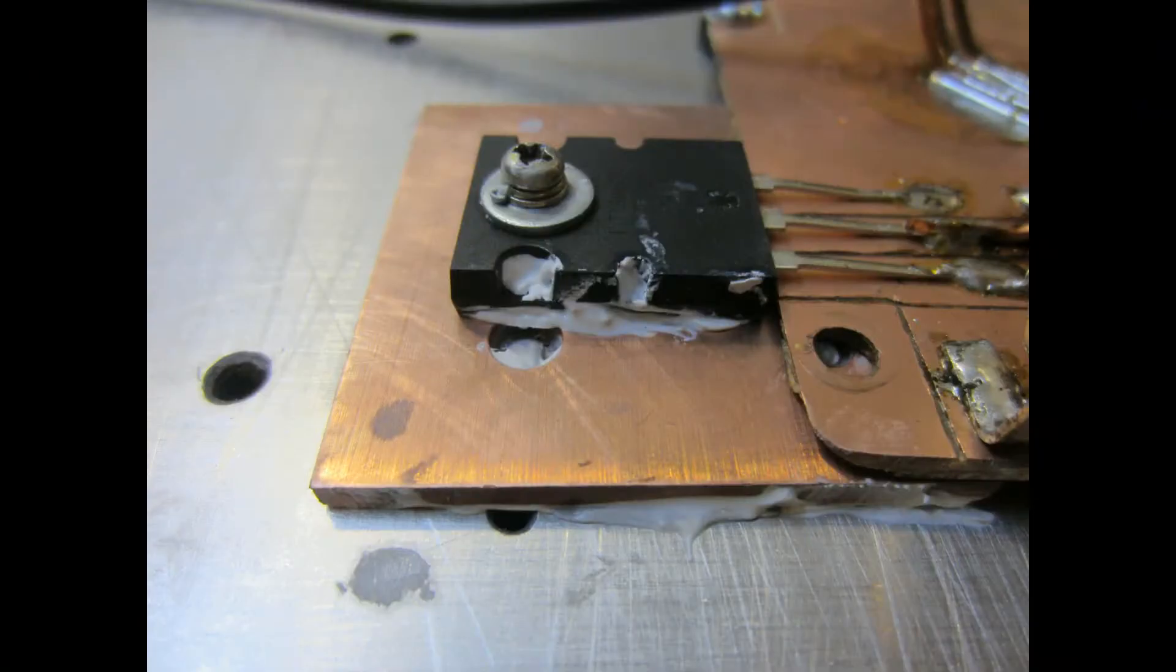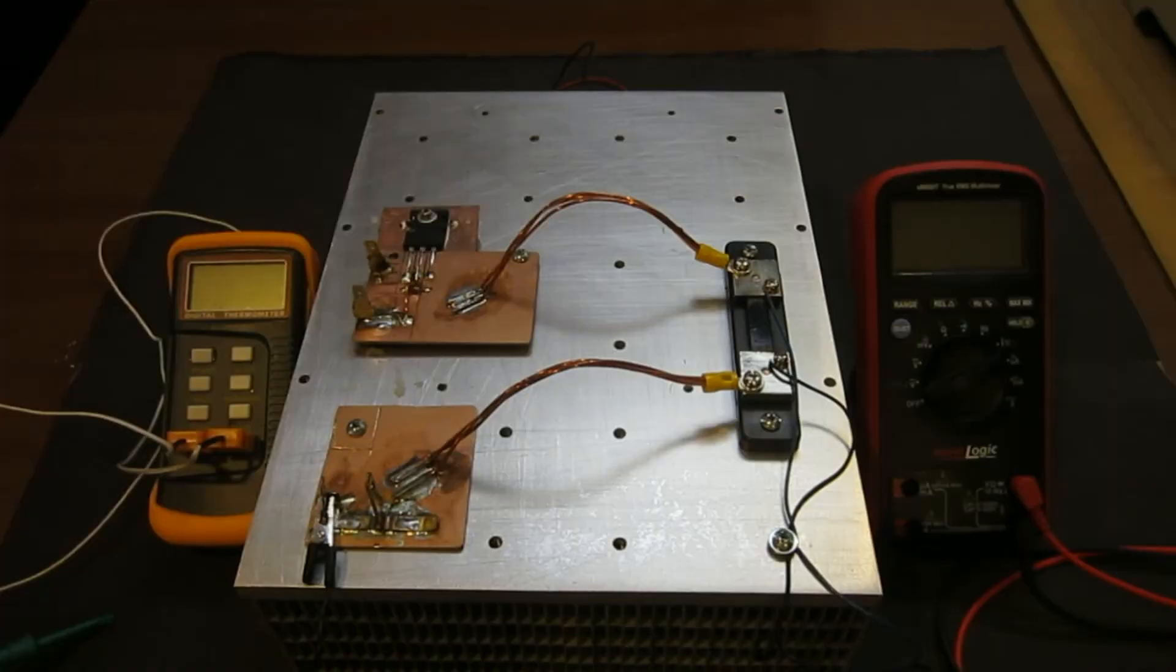So hopefully, this will improve the thermal transfer as a large surface area of the copper will likely dissipate heat transfer into the aluminum heatsink. With these modifications in mind, let's redo a couple of experiments and see how much power we can dissipate with this setup.